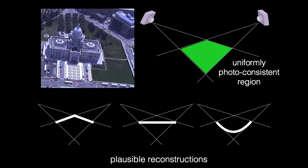When viewed from the two views illustrated here, all points inside the green quadrangle are equally photoconsistent, and therefore multiple reconstructions are valid.